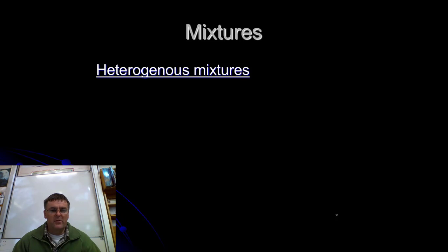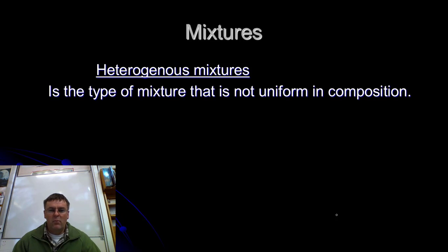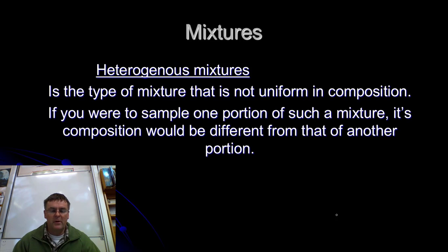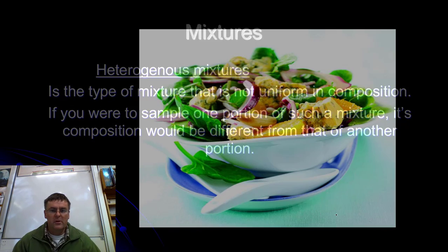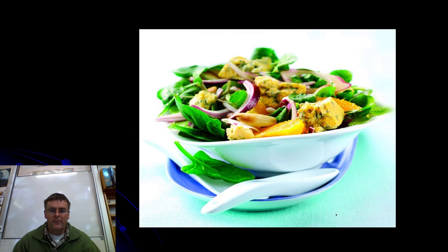So heterogeneous mixtures, wherever you look, it's not going to be the same. It's going to be different in all sorts of different places. So if I take a sample one place, it's different from somewhere else. There's a good example. That looks like a delicious kind of a salad. Green stuff in there, I can see some red onion, I can see some looks like blue cheese, looks like yellow capsicum, that looks like a bit of garlic in there as well. That looks like an interesting salad. Might make my breath a bit stinky, but that looks delicious.